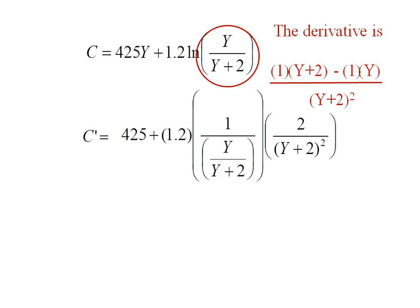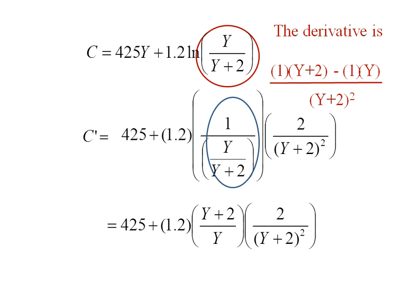Now this looks kind of ugly so I'm going to do some simplifying. First thing I want to get rid of is I don't like this 1 over the y over y plus 2. So really I can flip that bottom fraction up and this becomes y plus 2 over y.